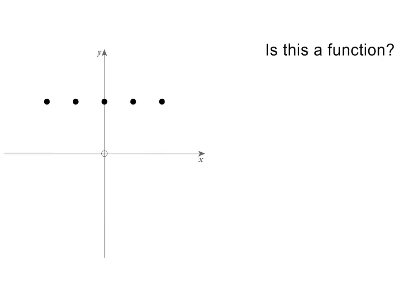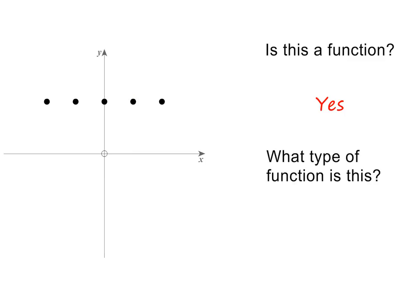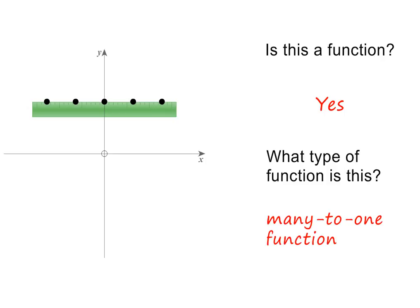In the next example, we are given a graph made up of five separate points. Is this a function? If we use the vertical line test, it is clear that the ruler will only ever go through one point at a time. So yes, it is a function. But what type of function is it? If we use the horizontal line test, it is clear that the ruler passes through all the points at the same time. This is therefore a many-to-one function. Please pause the lesson if you need to.